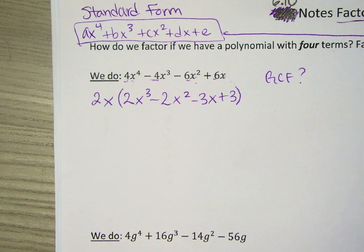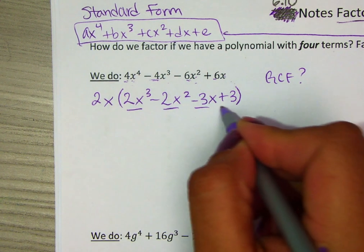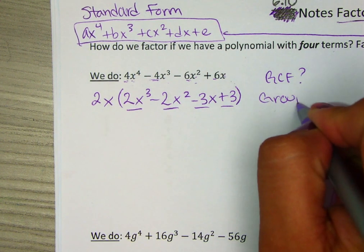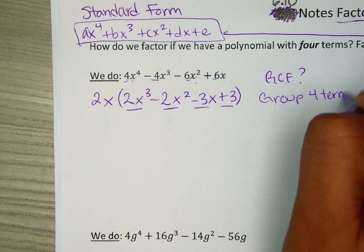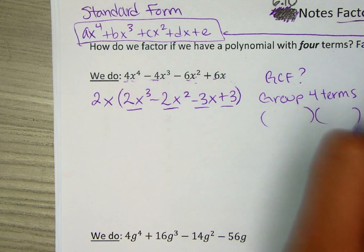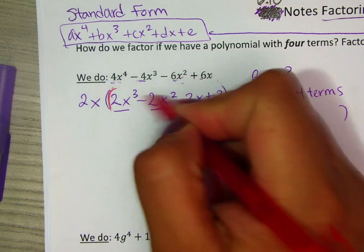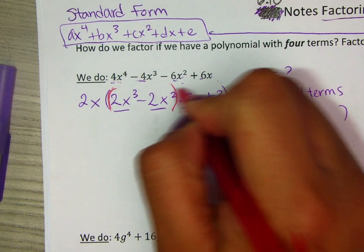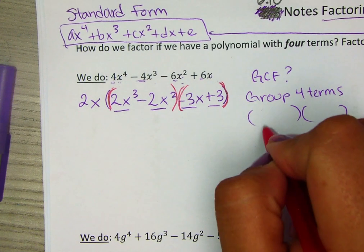The second step is to look at the four terms that you have in here and group them. That means you're going to write parentheses in between them. I'm going to write parentheses between these, and then parentheses between these. So you turn them into two binomials.